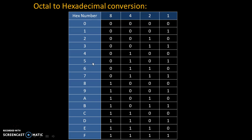Let's take the example of 5 — 5 is 4 plus 1, so the code is 0101. Let's take the example of 9 — 9 is 8 and 1, so the code is 1001.